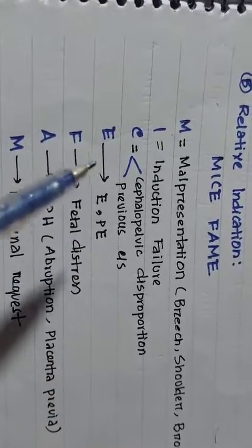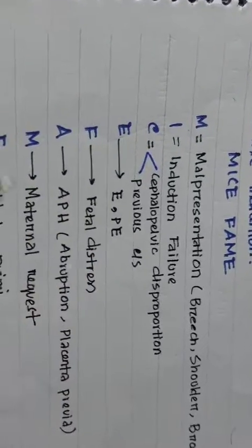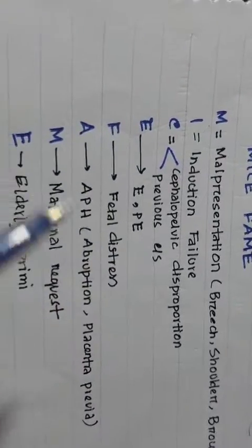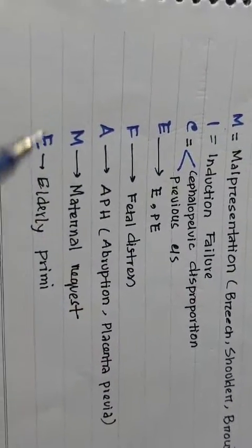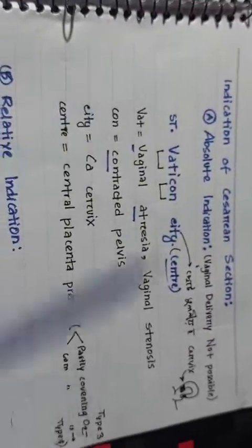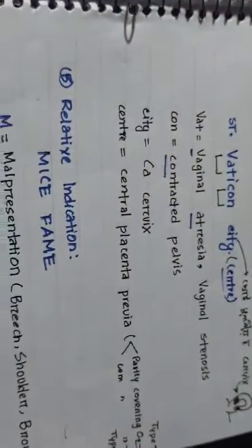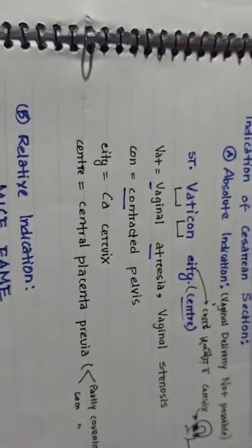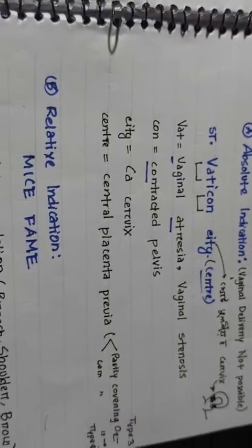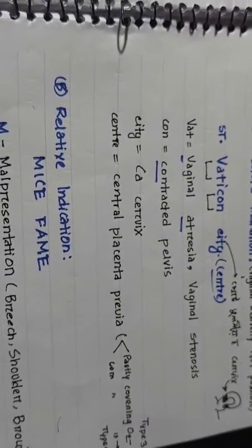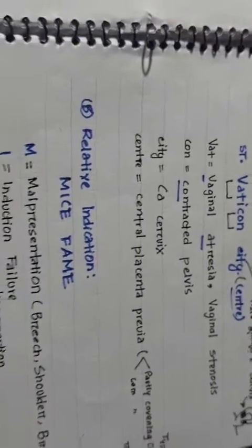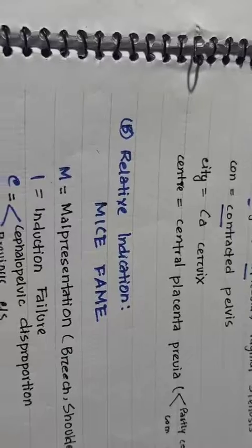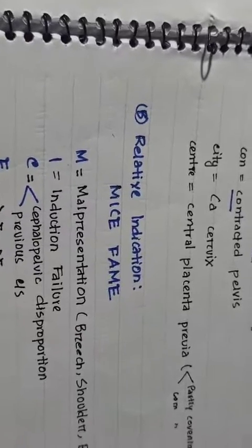So to summarize: the relative indications are malpresentation, induction failure, cephalopelvic disproportion, previous caesarean section, eclampsia/pre-eclampsia, fetal distress, antepartum hemorrhage, maternal request, and elderly primigravida — remembered as 'MICEFAM'. And the absolute indications are remembered as 'Vatican City Center'. Thanks everyone for watching this video. I hope you liked it — please subscribe to my channel.